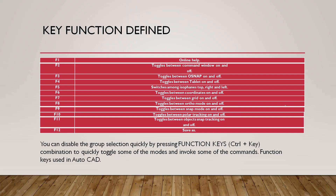The key functions and shortcut keys are defined as follows: F1 is online help; F2 toggles the command window on or off; F3 is OSNAP on or off; F4 is tablet on or off; F5 is isoplane toggle (top, right, left); F6 is coordinates on or off; F7 is grid on or off; F8 is polar tracking on or off; F11 is object snap tracking on or off; F12 is the save command.